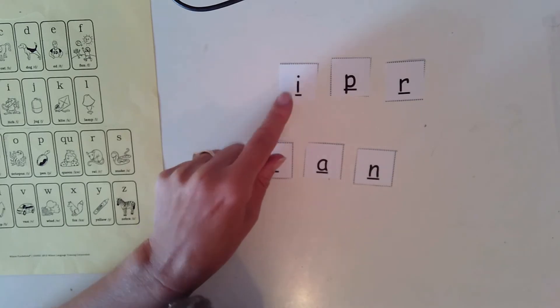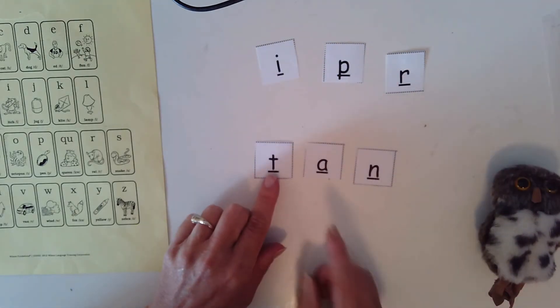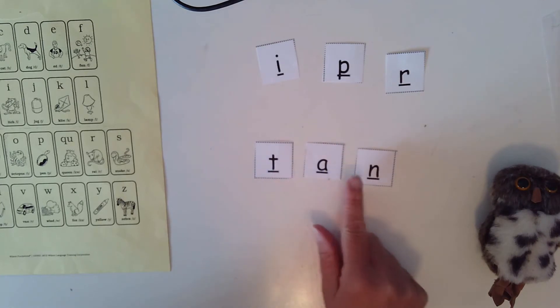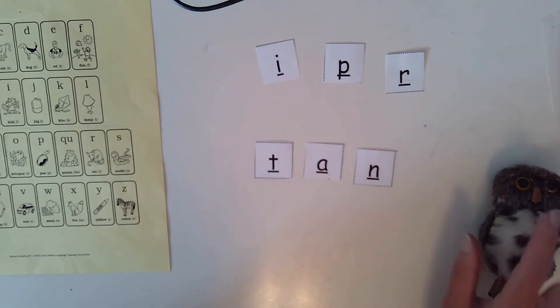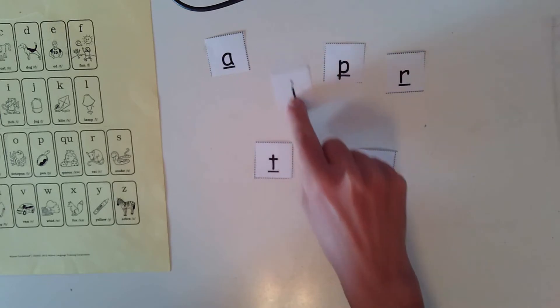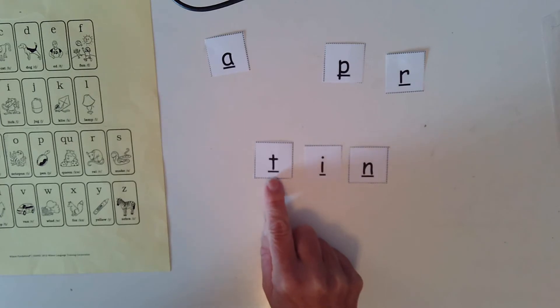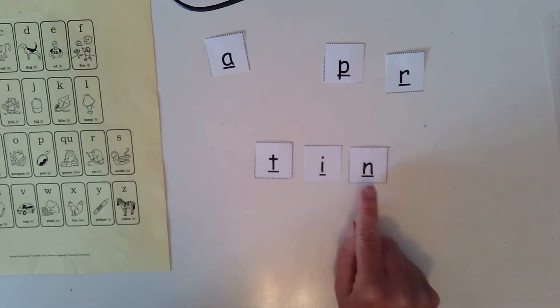Sorry about that. But we have tan down here. T-a-n. Tan. Now my middle sound says a. Today we are going to change our middle sounds. So I am going to change my A to an I. The middle sound is different. Let's tap the word. T-i-n. What word do we make? Tin.